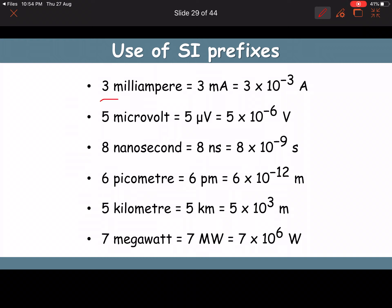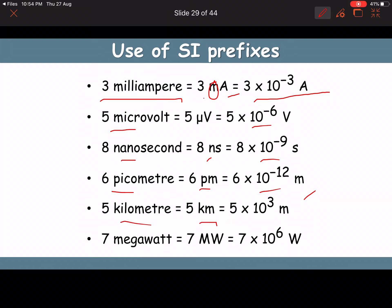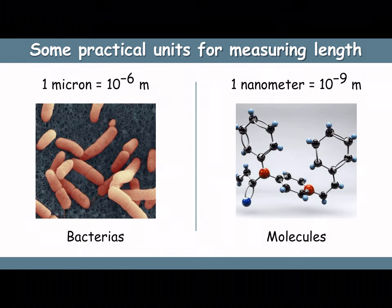Examples of SI prefix usage: 3 milliampere = 3 mA = 3 × 10⁻³ A; microvolt = 10⁻⁶ V; nanosecond (ns) = 10⁻⁹ s; picometer (pm) = 10⁻¹² m; 5 kilometer = 5 × 10³ m; megawatt (MW) = 10⁶ W.